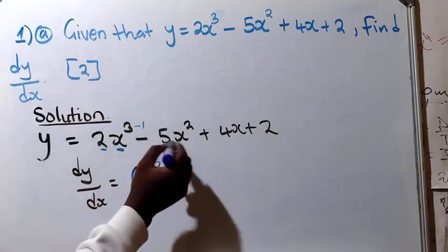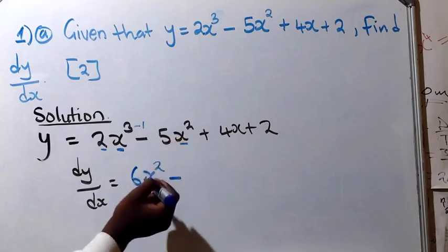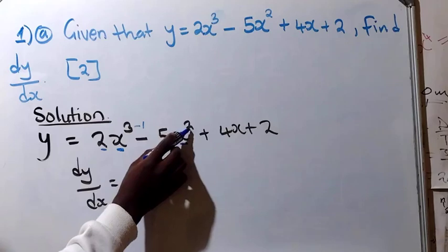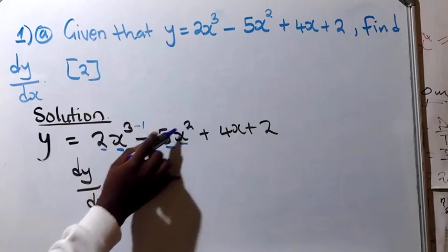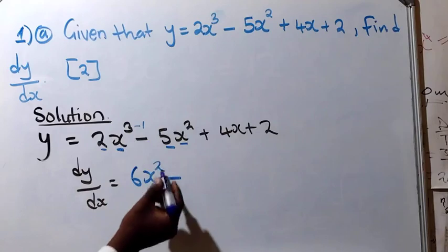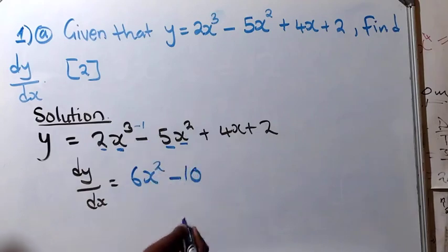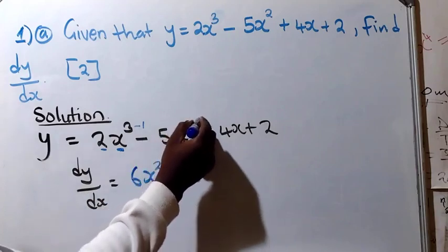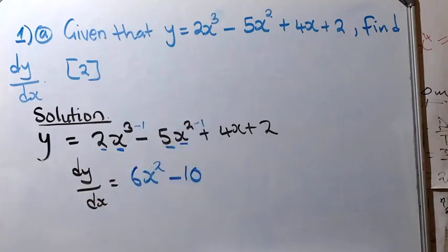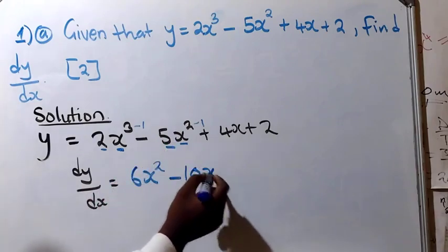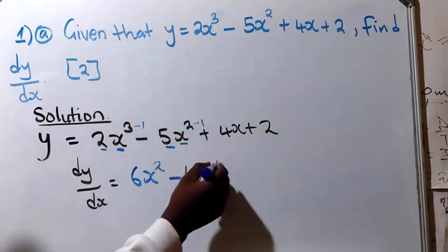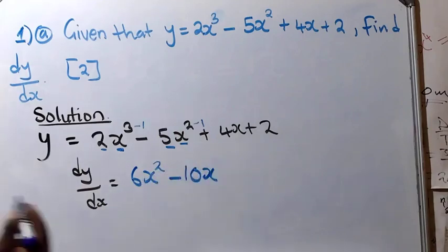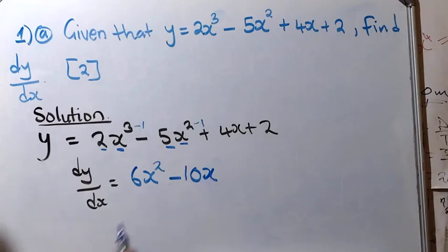Minus — for the second term, we have x with coefficient 5 and power 2. So 2 times negative 5 gives negative 10. Then you write x, and the power is reduced by 1: 2 minus 1 gives x to the power 1. You can just write x without indicating the power of 1, since you understand it's still a power of 1.